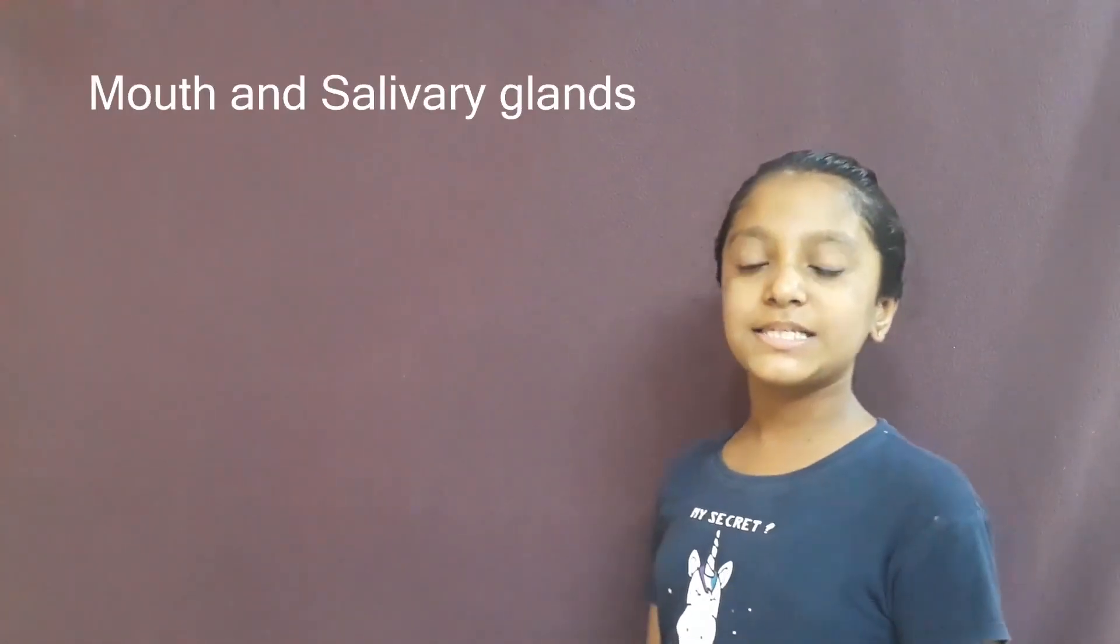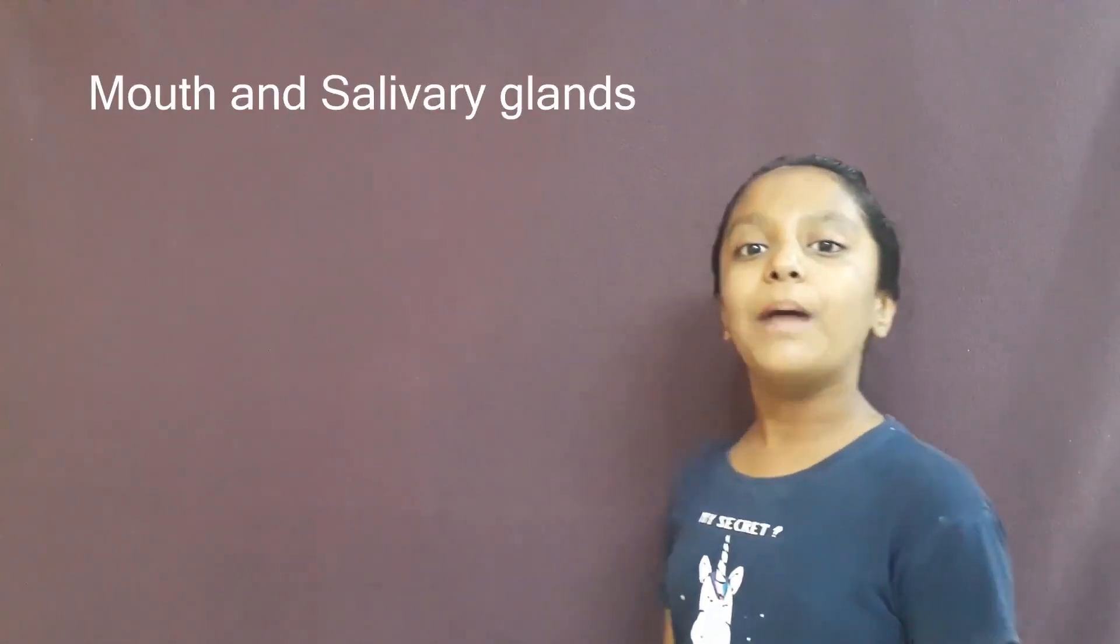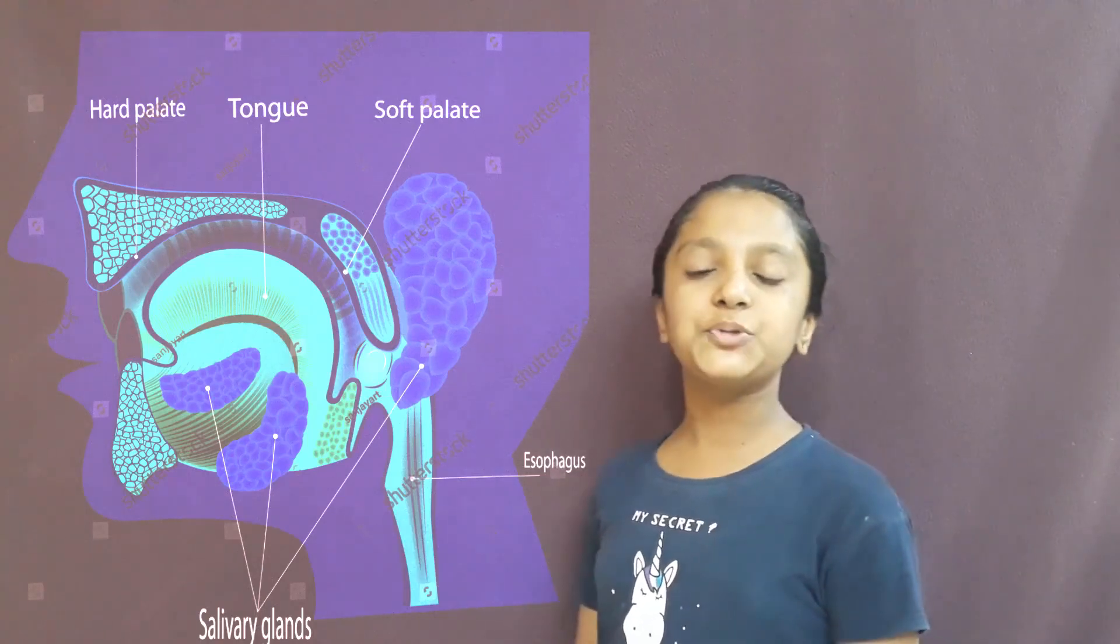Now I am going to introduce the parts and see about it. First, the mouth and salivary glands. The digestion of food starts from the mouth. Here we bite and chew the food.